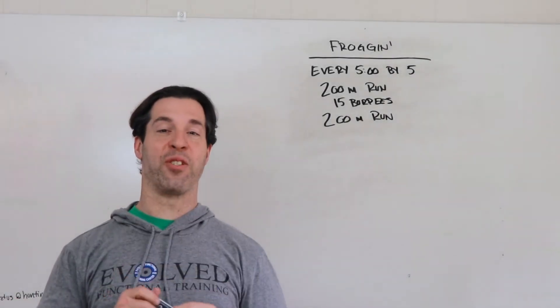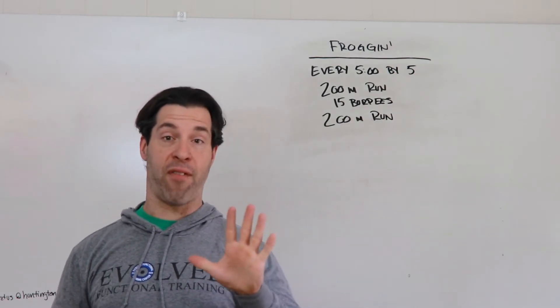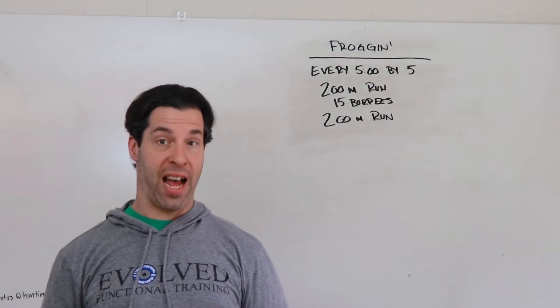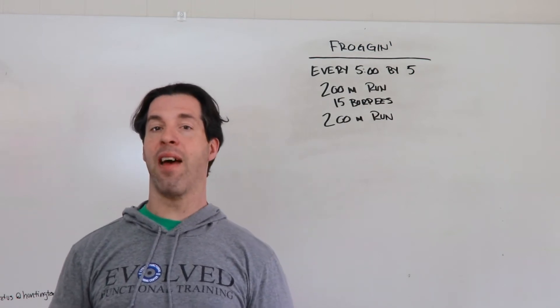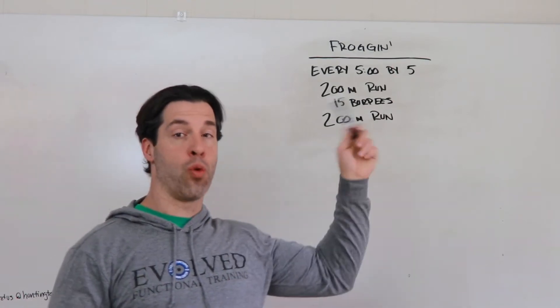Hey guys, here is your whiteboard for the workout Froggin. Froggin is five rounds on the fives, so you'll start around zero, five minutes, ten minutes, fifteen minutes, and twenty minutes. In that five-minute window you want to...